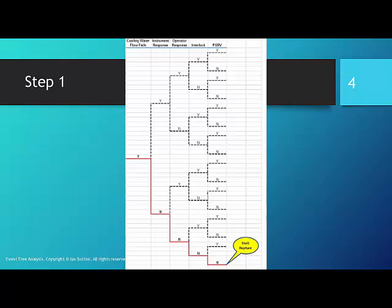However, if the instruments do not respond properly, we have the letter N and we follow the solid red line. The next safeguard is operator response. The operator technician recognizes that a high-pressure situation is developing and that the instruments have not responded correctly, so he or she takes corrective action.